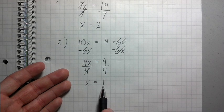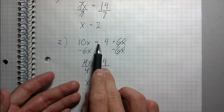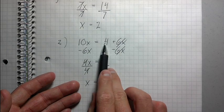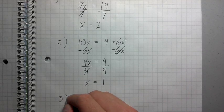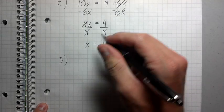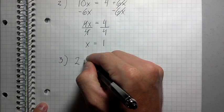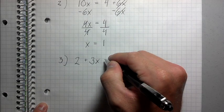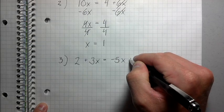Again, we can check the equation by putting x in. 10 times 1 is 10 equals 4 plus 6 times 1 is 6. 4 plus 6 is 10. Perfect, it works. Alright, so the third example is going to be kind of a combination of these two. It's going to be 2 plus 3x equals negative 5x plus 18.